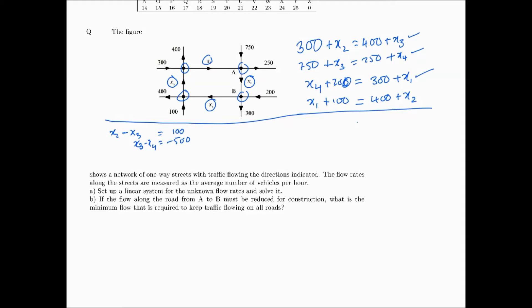The third equation gives minus x1 plus x4 equals 300 minus 200, which is 100. And the last equation gives x1 minus x2 equals 400 minus 100, which is 300.